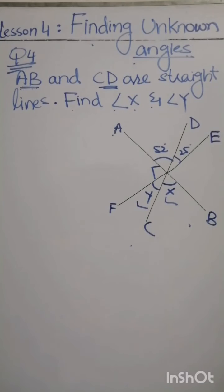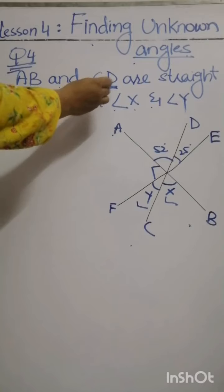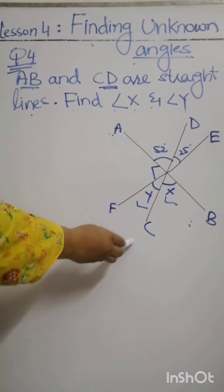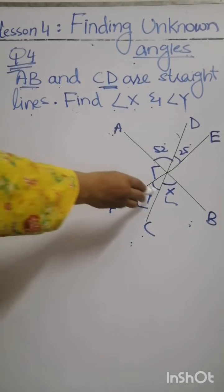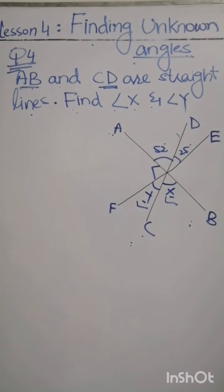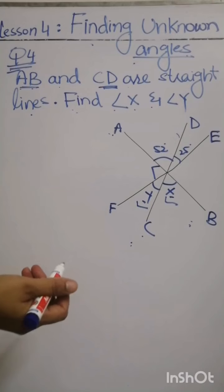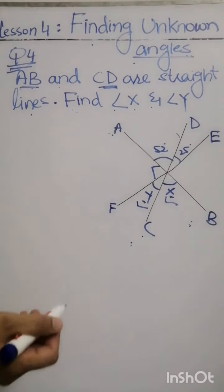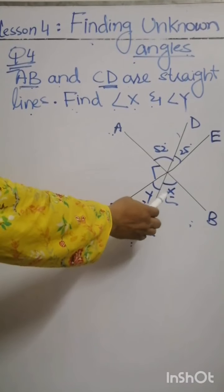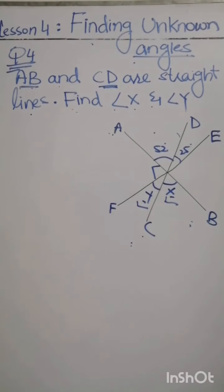Hope you understood the concept from the slides. Now we have question number four from our textbook, page 254. AB and CD are straight lines. Find angle x and angle y. We can use different concepts here — vertically opposite angles, angles on a straight line, and angles at a point. The easy one is: angle x and 52 degrees are vertically opposite angles.